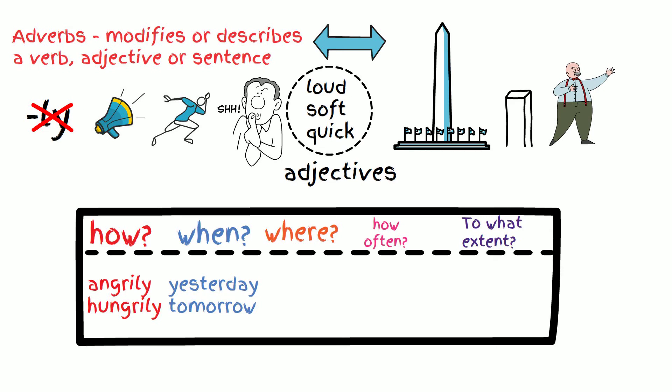These type of adverbs tell when something occurred. The third part of the chart tells where. These words include here and there as an example. How often something occurs are also adverbs such as always and never. The last part of the chart is to what extent and includes the words almost and very.